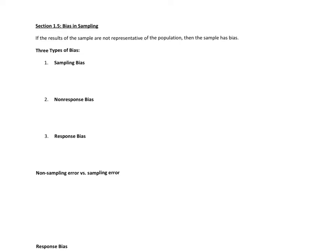Welcome to section 1.5: bias in sampling. Sometimes, no matter how careful we are about choosing our sample and doing the correct type of observational study, the results of the sample are not representative of the population. When that happens, our sample has bias, and we're going to go over the different types of bias in section 1.5.